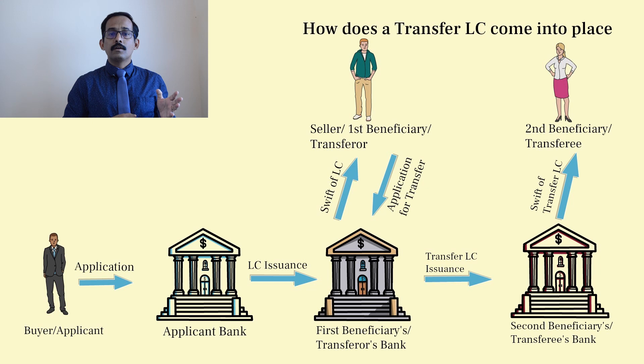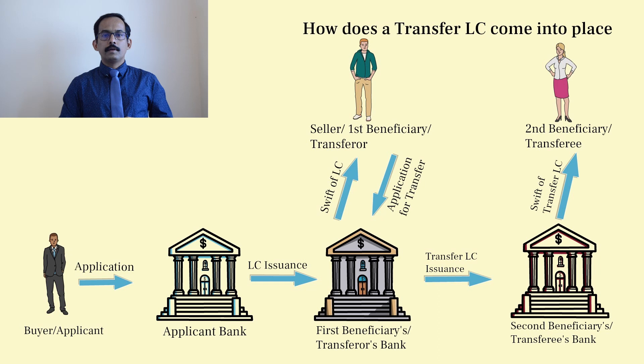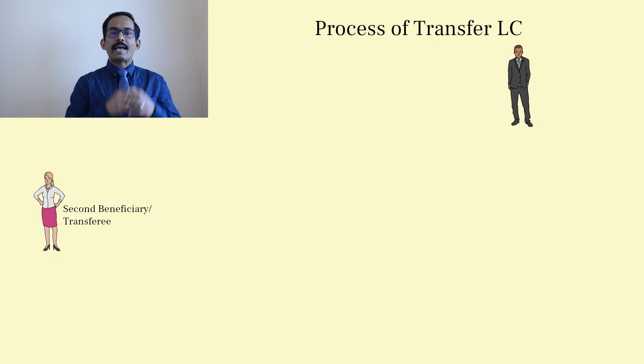One important point is that all the terms and conditions of the original LC are transferred to the second beneficiary without any change, except for the latest shipment date, the expiry date, and the amount of the LC. The LC can be transferred to a second beneficiary only if it has been specifically mentioned that the LC is a transferable one. Every LC that does not have such a clause would be treated as a non-transferable LC. Once the transfer LC has been issued, the second beneficiary directly ships the goods to the applicant.